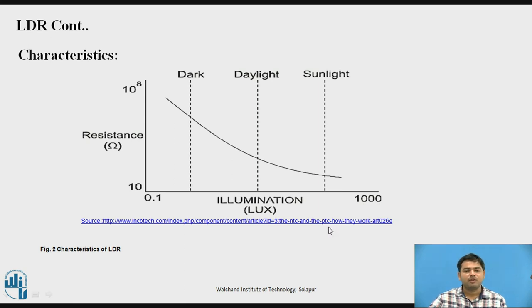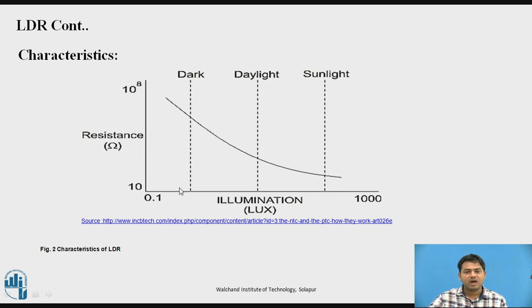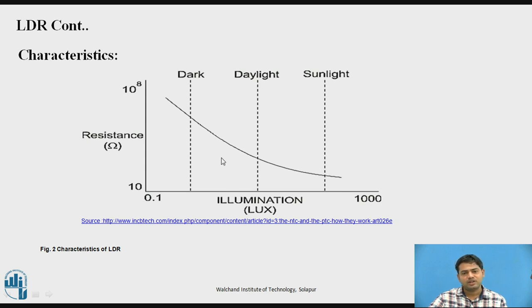This is the characteristic curve of the LDR — resistance versus intensity, measured in lux. On the left side is dark, low-intensity conditions. During daylight, typically around 1000 lux of intensity is observed. In the dark, resistance is very high — in the range of 10^8 ohms, greater than a megaohm. Under full sunlight, the resistance value comes down to a two-digit number, on the order of 10 ohms, confirming that resistance is inversely proportional to light intensity.